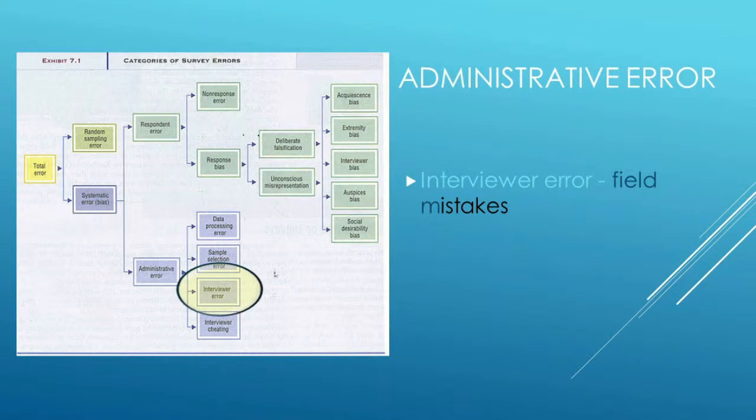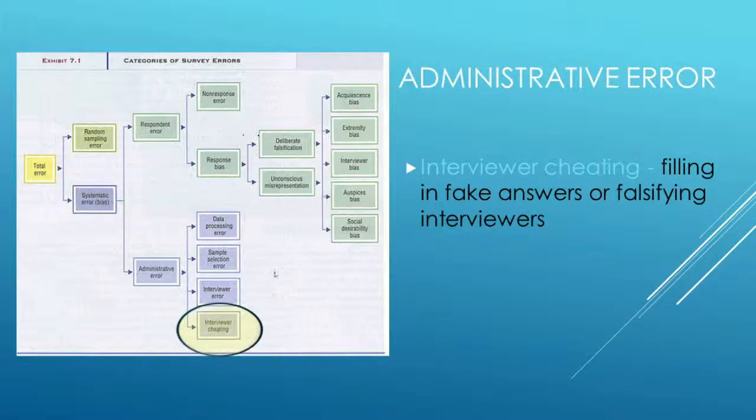Another common administrative error is the interviewer error — where the interviewer actually makes mistakes in the field. For example, the interviewer misses pages of the questionnaire, leaves out questions, or doesn't read questions correctly. These are all examples of interviewer error, and we can run into serious concerns if some interviews are tainted because the interviewer has made errors throughout the interviewing process. Another form of administrative error that is all too common is interviewer cheating — where the interviewer does not actually complete the survey accurately at all. For example, if the interviewer completed the survey themselves rather than going and actually interviewing people, that would be an example of interviewer cheating. These things throw survey results off totally.